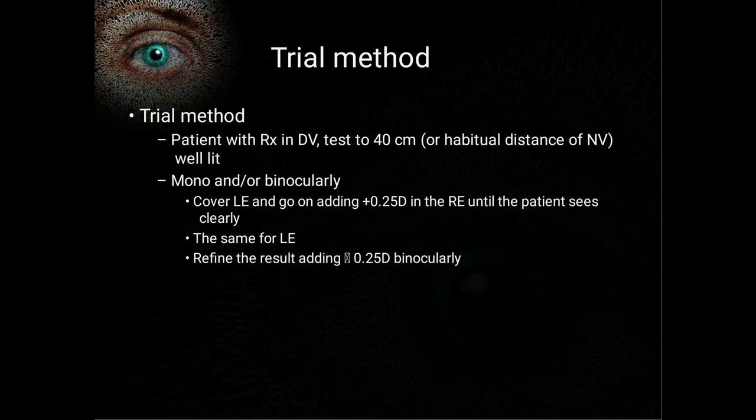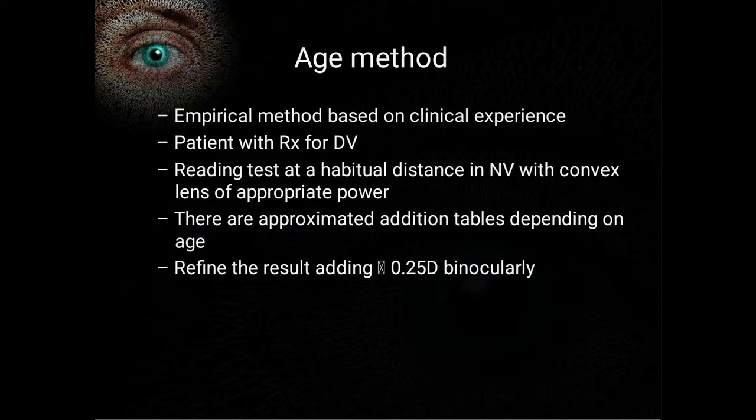In the trial method, we hold the Snellen's chart or Jaeger's chart at a distance of around 30 centimeters and test near vision. When the patient can read the N6 line clearly, that is our endpoint.